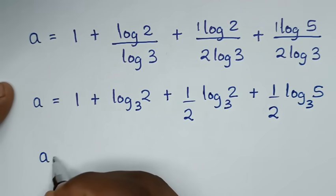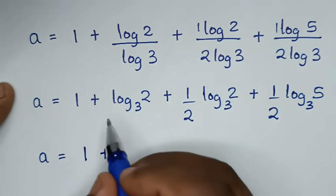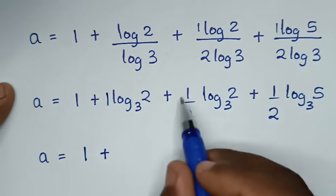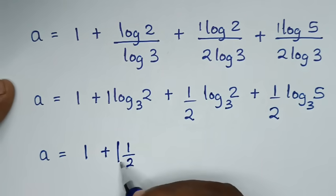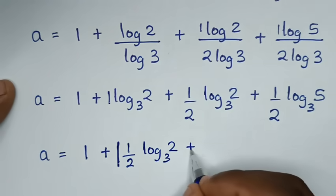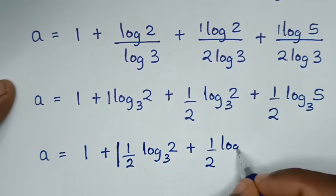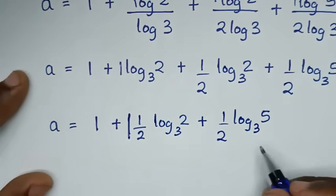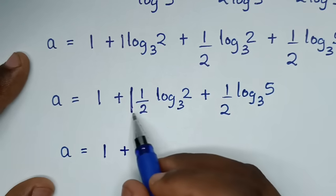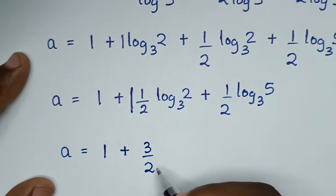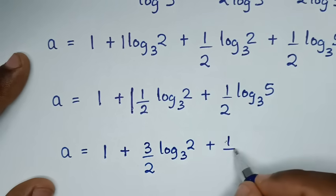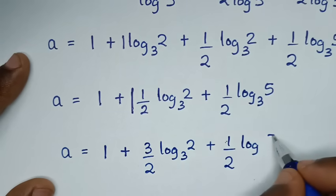Then in the next step, it will be a is equal to 1 plus — from here this is the same as 1 log of 2 base 3 plus a half log of 2 base 3, so it will be 1 and a half log of 2 base 3, plus this half log of 5 base 3. Then it will be a is equal to 1 plus 3 over 2 log of 2 base 3, plus a half log of 5 base 3.